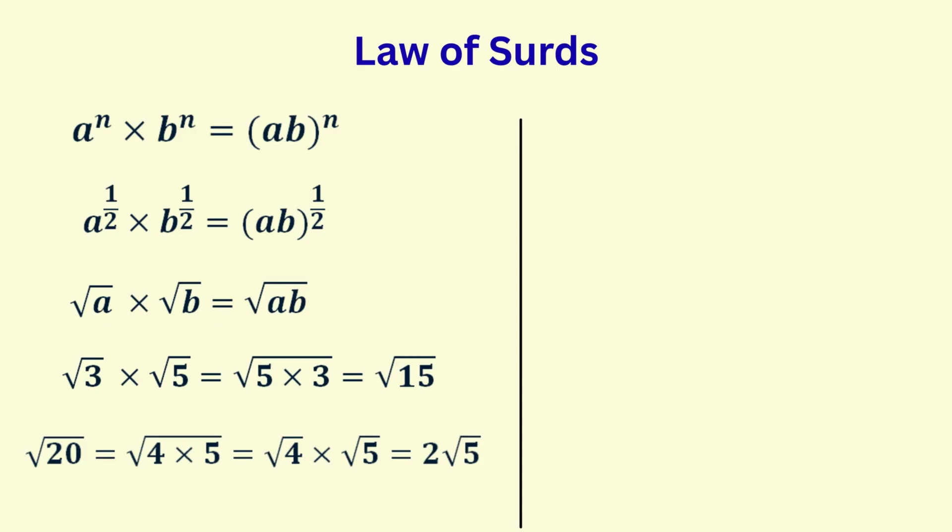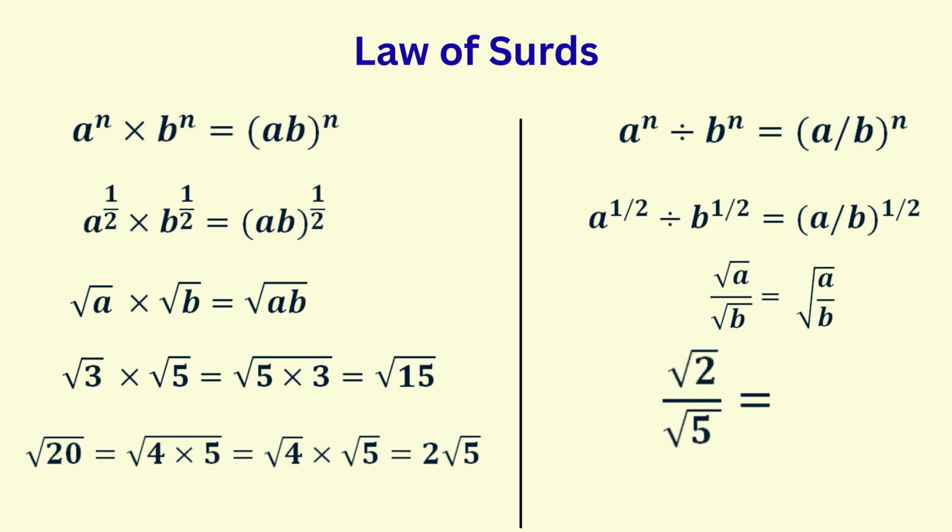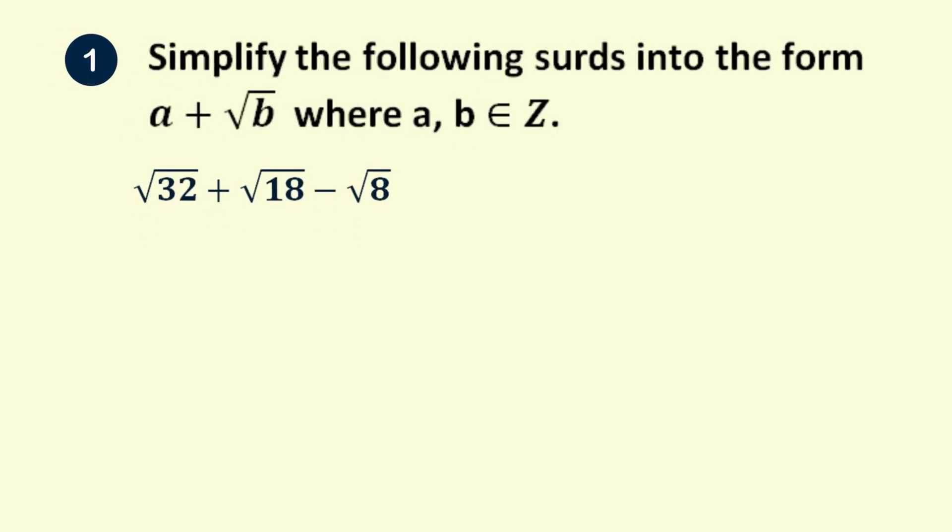By the way, the same principle applies for division. Root a over root b is the same as root a over b. So for example, if we have root 2 divided by root 5, it's the same as the square root of two-fifths. Let's try some examples.